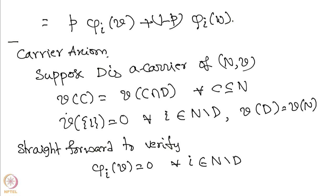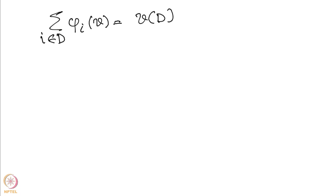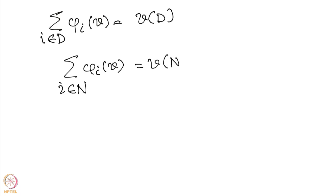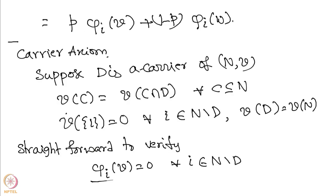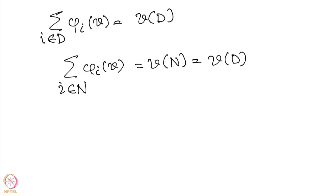We can verify this directly: take i not in D and substitute into the formula, and we get phi_i(v) = 0. What we finally need to show is that the sum of phi_i(v) for i in D equals v(D). This follows from the fact that summing phi_i(v) over all i in N gives v(N), which equals v(D) since the carrier condition gives v(N) = v(D).